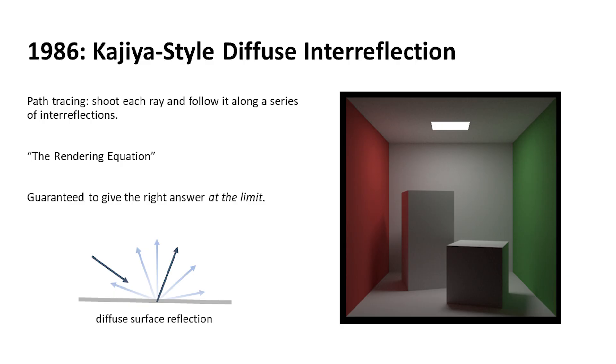In 1986 was the next theoretical leap, which is Kajiya-style diffuse interreflection. This is a classic paper, which we'll go to in a later lecture, called The Rendering Equation.